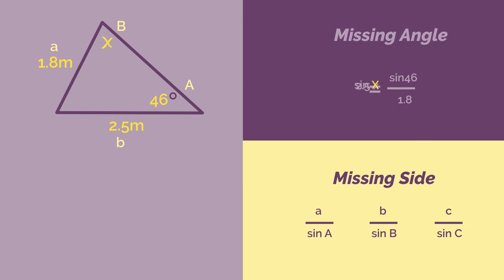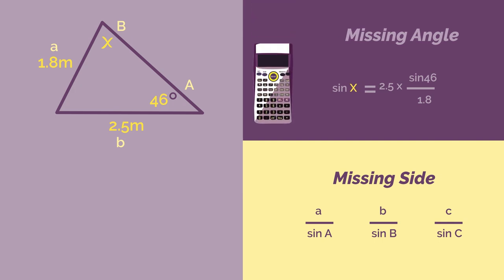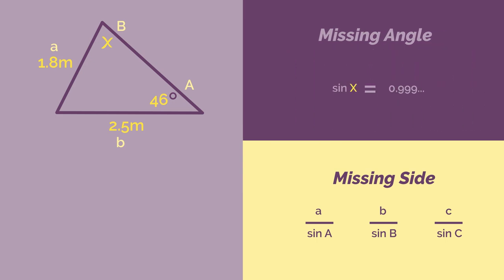We get 2.5 multiplied by sine 46 divided by 1.8, which we can enter into our calculator. So then sine x equals 0.999 and so on. Remember, to get x on its own we must use inverse sine. In our calculators type in sine minus 1 brackets 0.999 etc. close brackets enter, so that gives us 87.5 degrees.